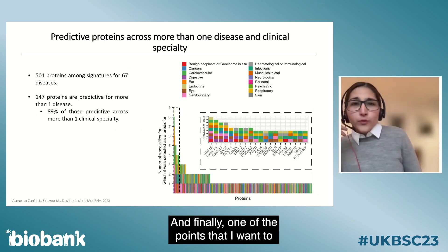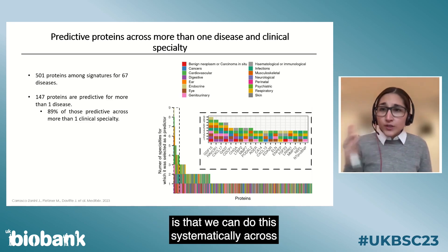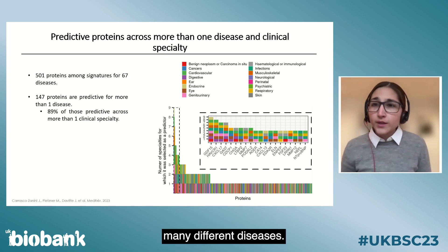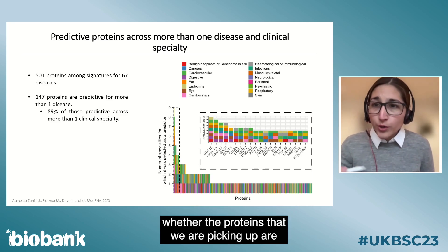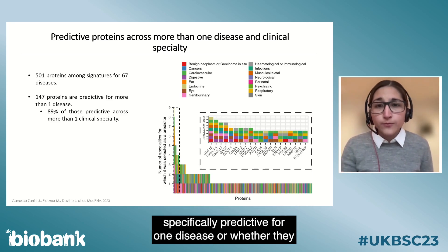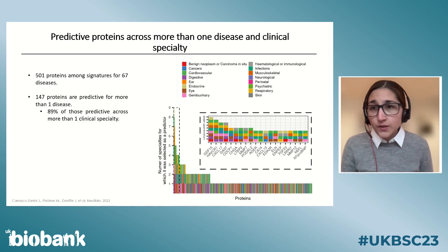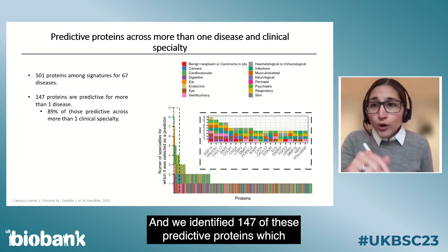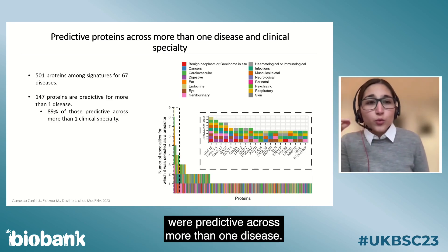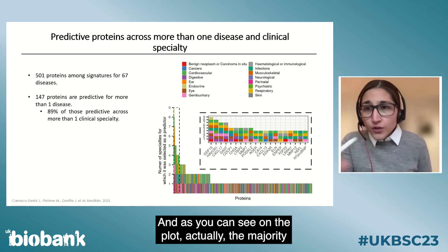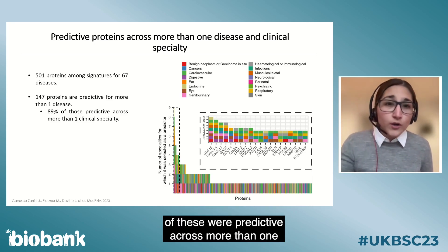One of the real strengths of UK Biobank is the ability to do this systematically across many different diseases. This allows us to address whether proteins are specifically predictive for one disease or predictive across more than one. We identified 147 predictive proteins that were predictive across more than one disease, and the majority of these were predictive across more than one clinical specialty.